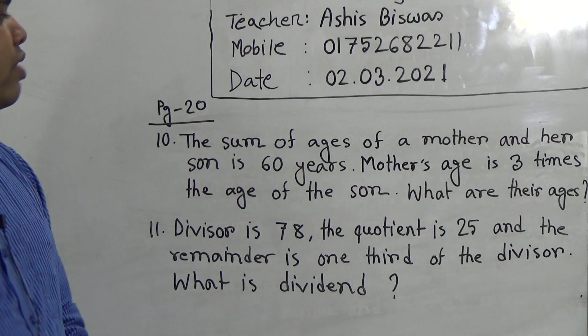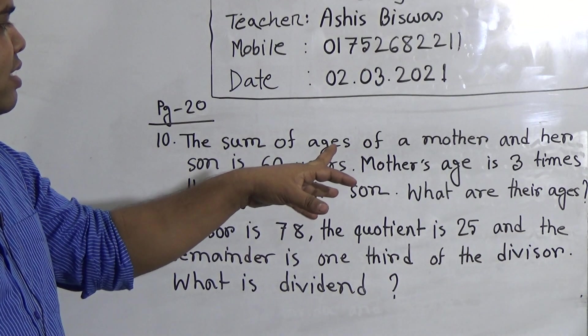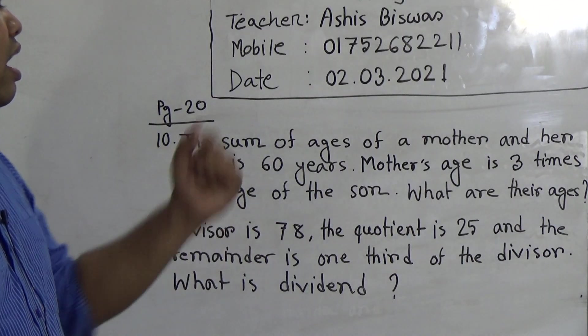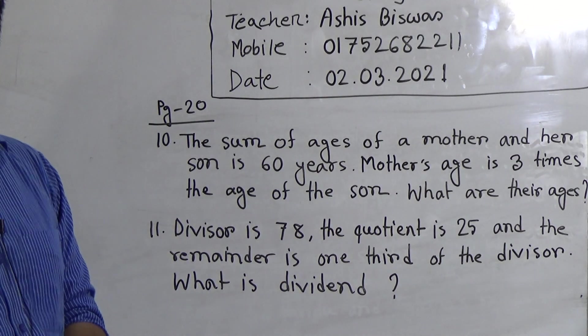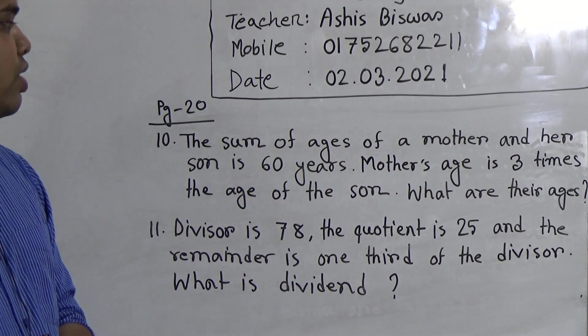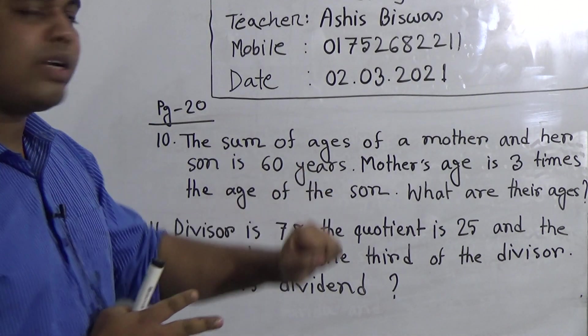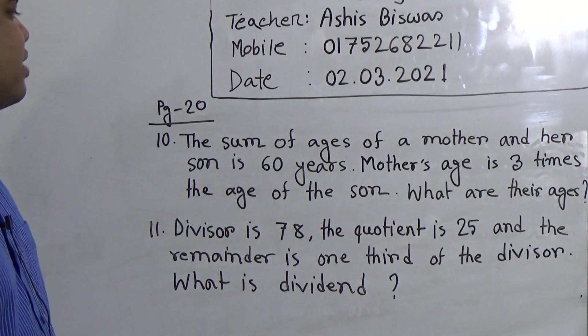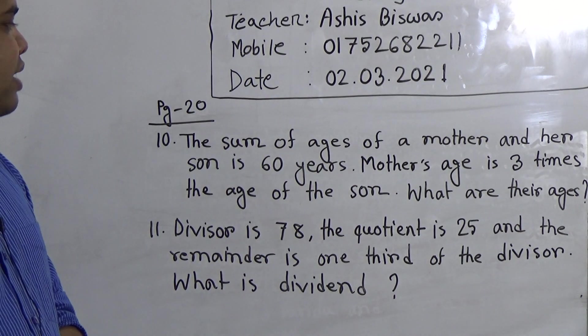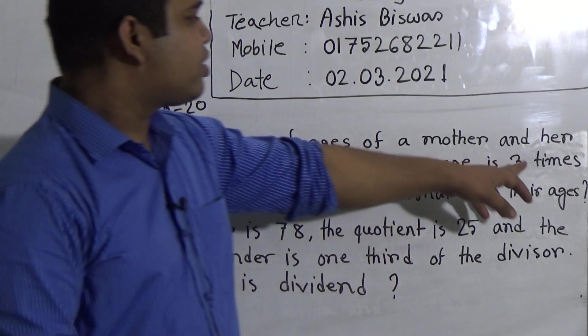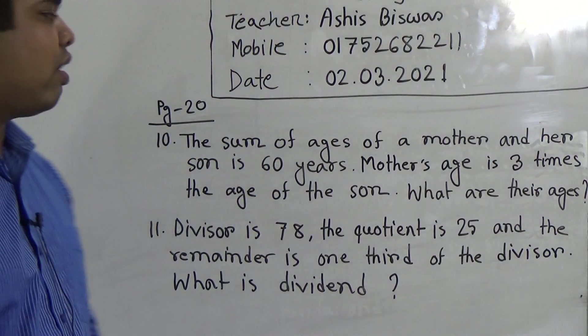So how can we solve this math? Mother's age is three times of the son's age. And son's age is one times of son's age. Then we add total 4 times. Now we divide this 60 by 4 times and we get the age of son. After that we multiply son's age with 3 and we get the age of mother.